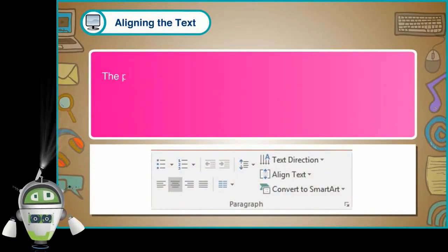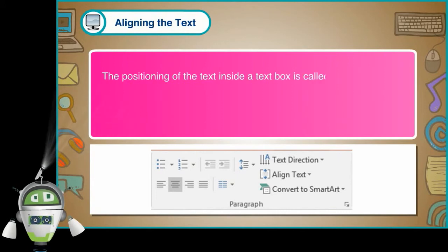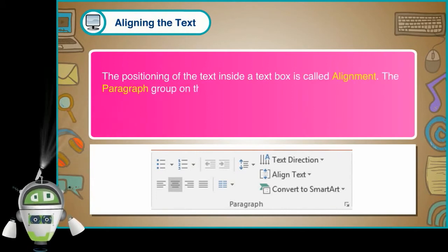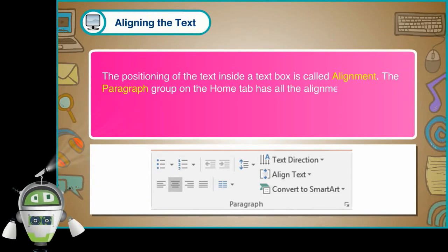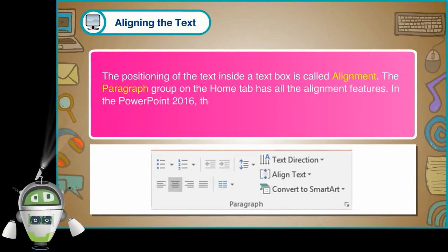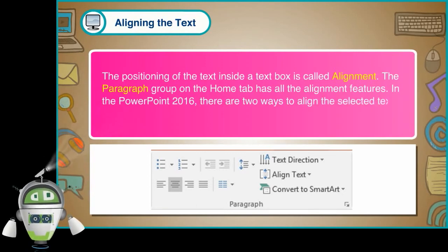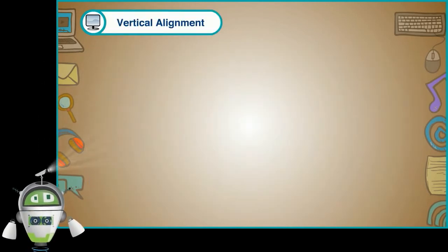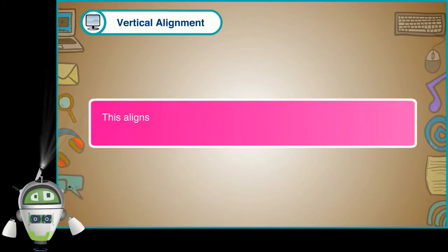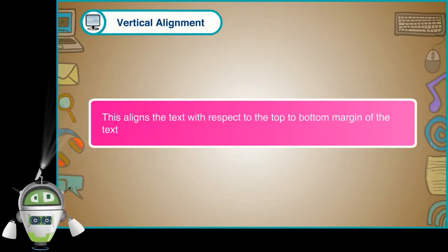Align the Text: The positioning of the text inside the text box is called alignment. The Paragraph group on the Home tab has all the alignment features. In PowerPoint 2016, there are two ways to align the selected text.